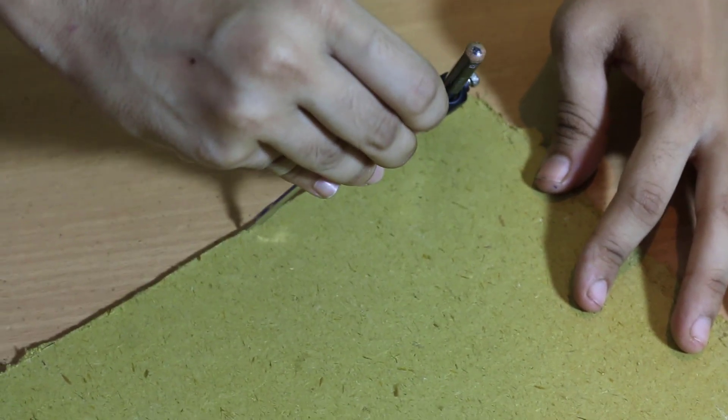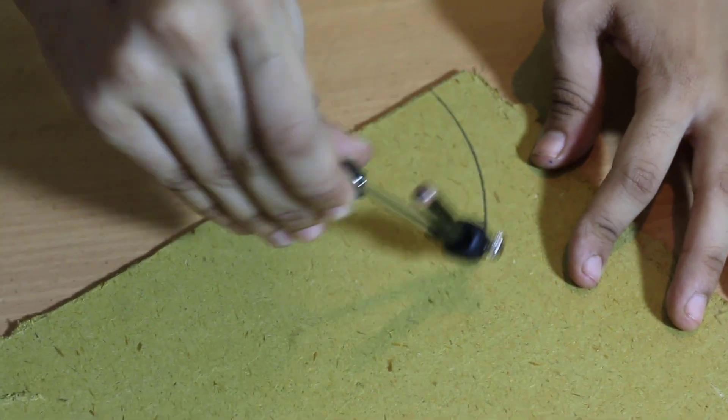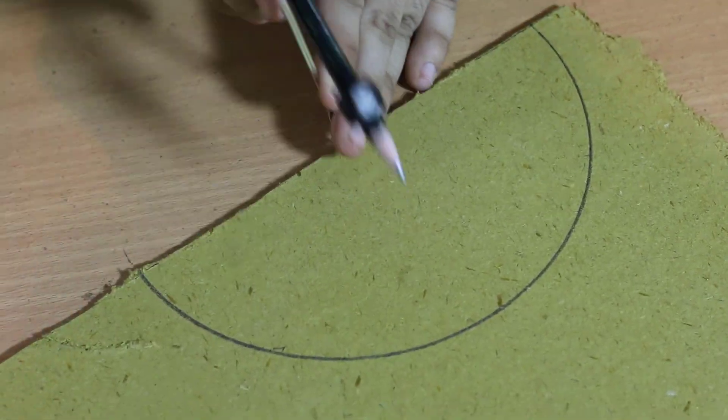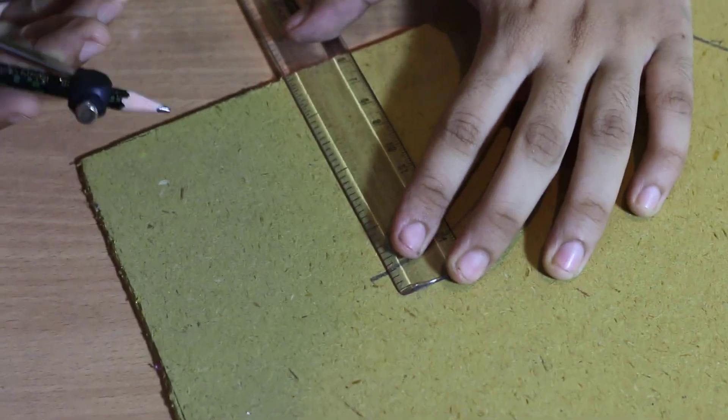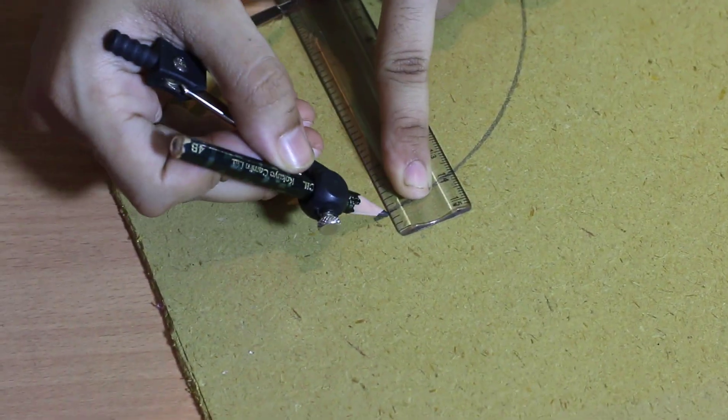Now, that our radius is approximately 9 cm, we will draw a semicircle and a quarter with the help of a compass and cut it out from the cardboard.